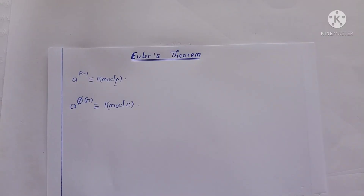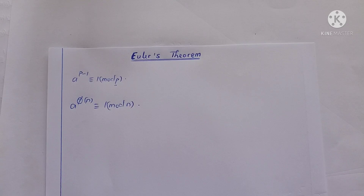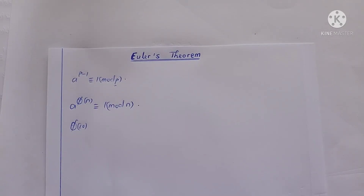Here, phi of n is what we call the Euler's Totient function, which counts the number of integers between 1 and n minus 1 that are co-prime to n. Let's take an example. If we want to find phi of 10, we need to count all integers between 1 and 9 that are co-prime to 10.